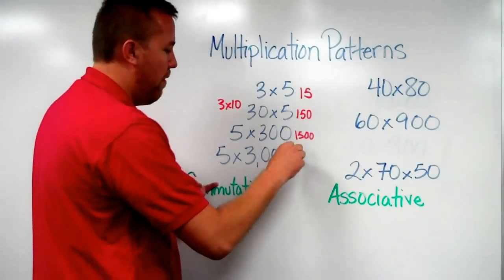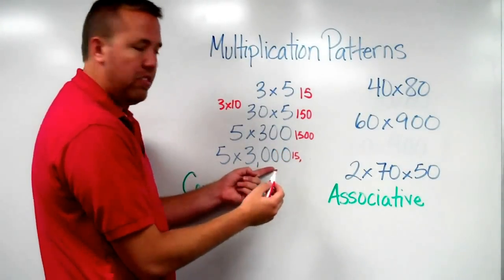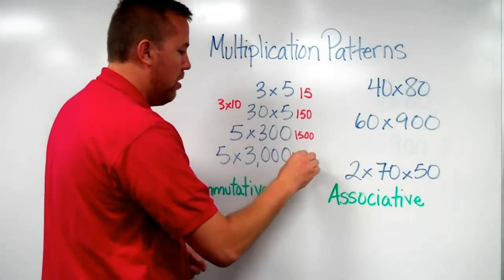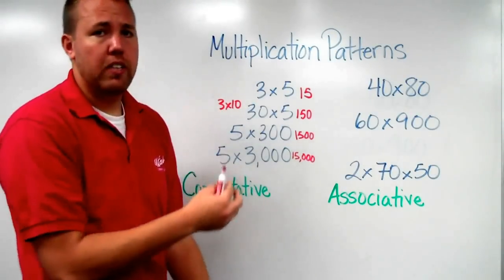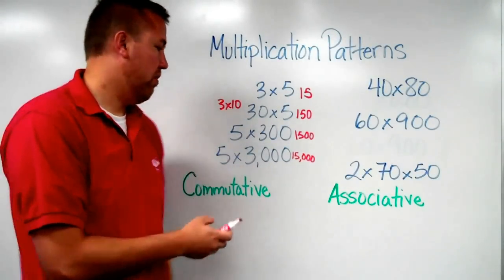5 times 3,000, 15. And then we have 3 zeros in the problem, every zero is taking its place value.